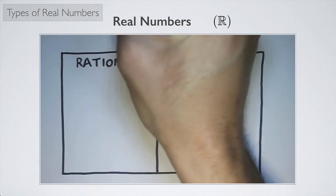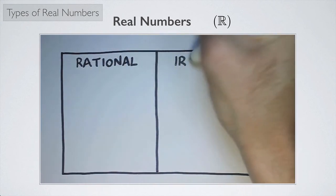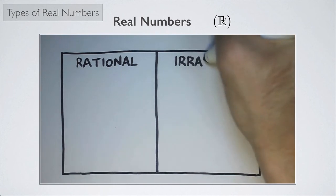And we're going to divide it into two things. Rational numbers, which we saw are the things that can be written as a fraction. And irrational numbers. And irrational numbers are just things that are not rational.